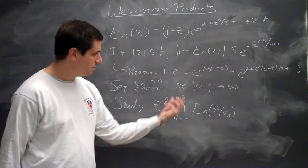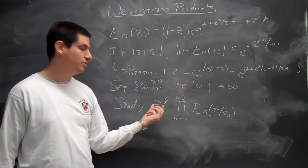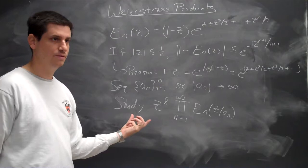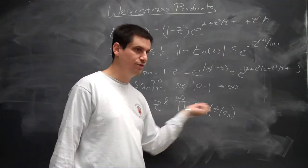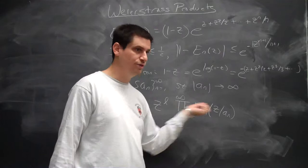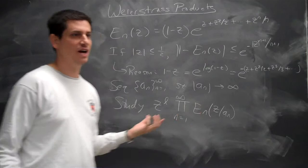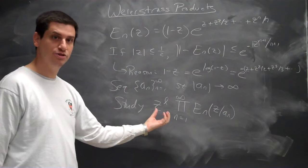Since |a_n| → ∞, eventually |z/a_n| < 1/2. If there were zeros at the origin — if some of the a_n's were zero — I'm recording that with z^l. Why can't I record them with this factor? Because if I put a_n = 0 it blows up. I can't have a_n = 0. So I have to handle the zeros at the origin separately, and this product handles the rest of them.